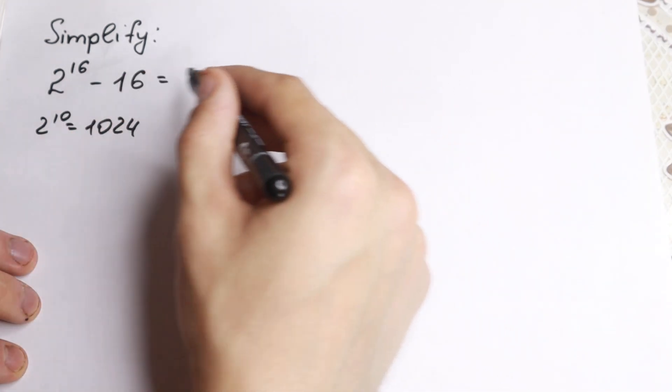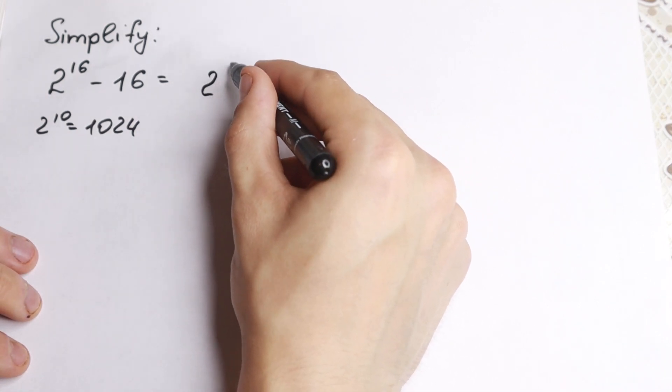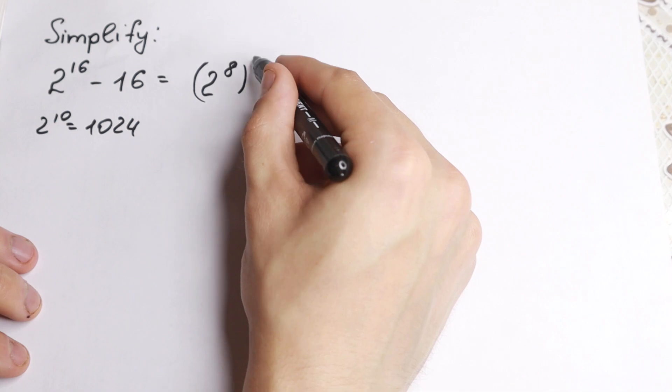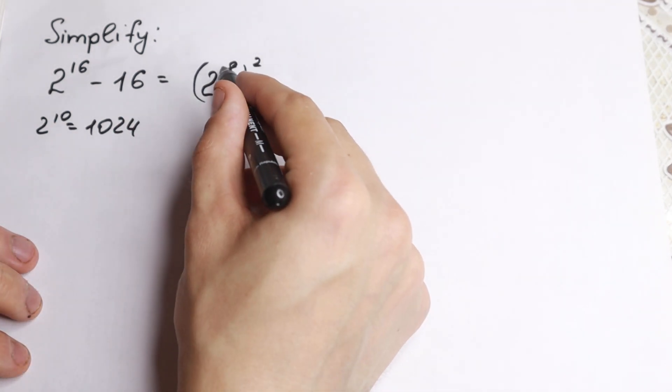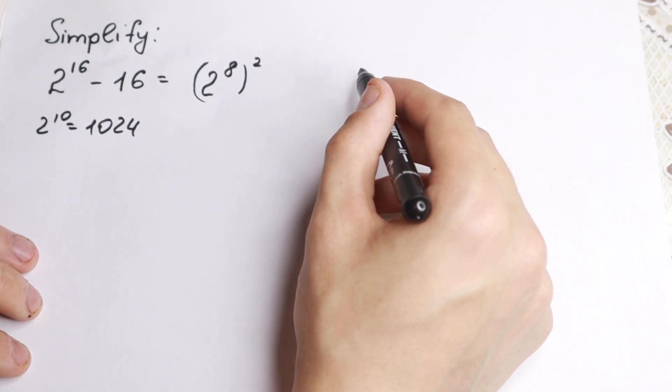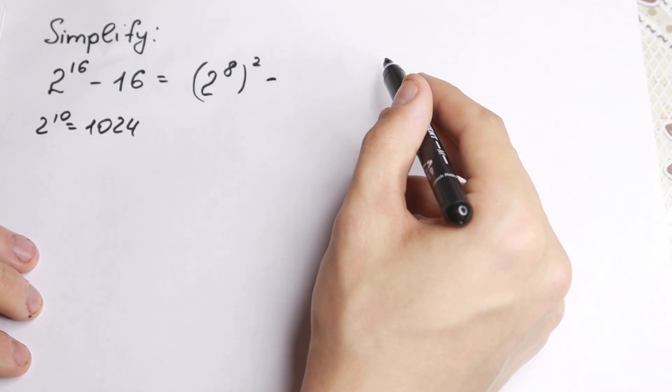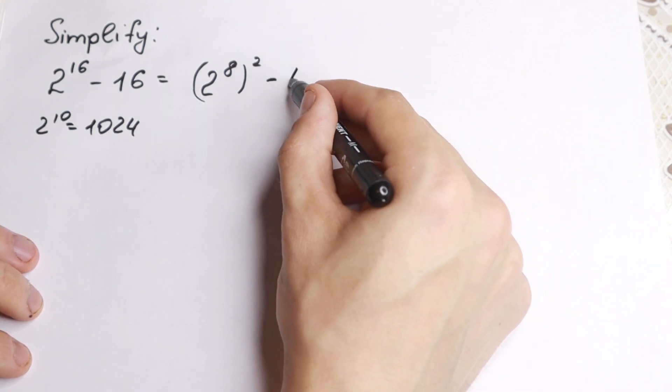First of all, let's try to reduce this power right here. I want to write this 2 to the 16th as (2^8)^2. If you know a little bit about powers, this is absolutely correct, because we multiplied 8 times 2, we have this 16. And minus, take a look closely, 16 is a really good number because we can write it as 4^2.